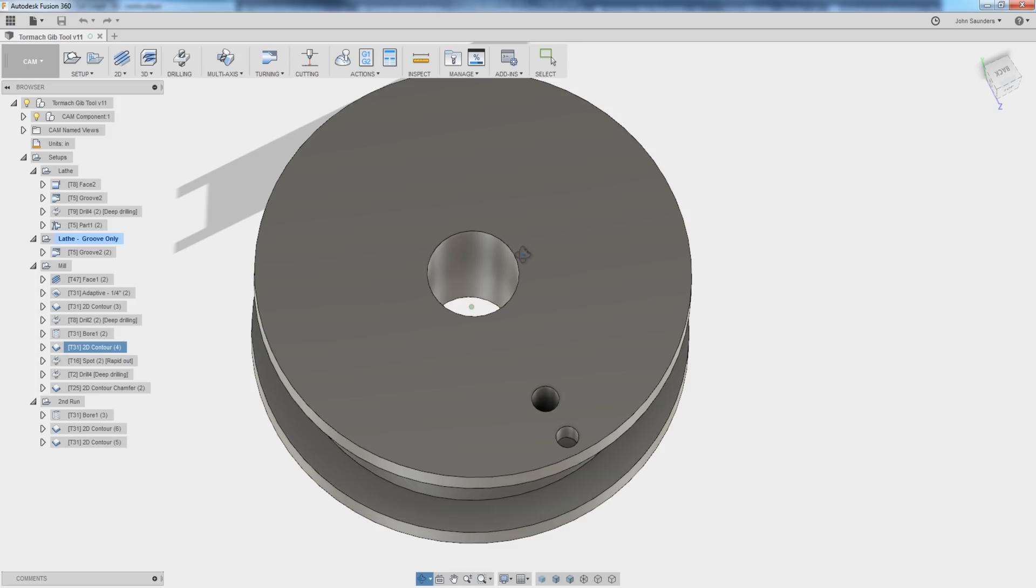You could accomplish the same thing with a slightly oversized reamer if you had one, but we've got a CNC mill. So interpolating is easy.